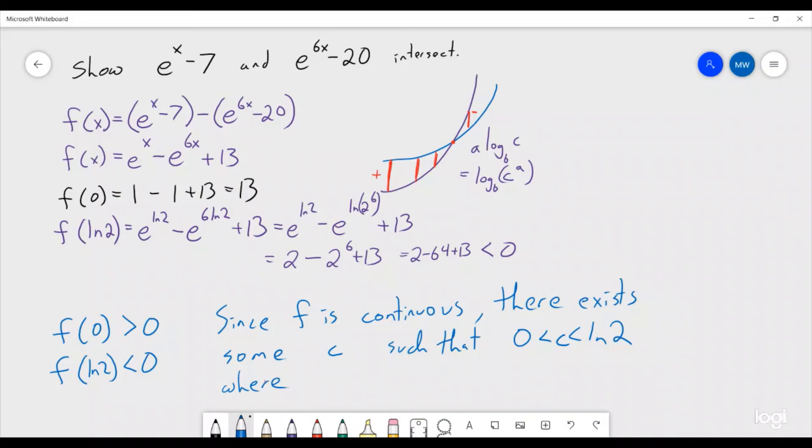Where f(c) equals 0. Now, if f(c) equals 0, that means that e^(c-7) is equal to e^(6c - 20). We don't know what it is, but we have successfully shown that those two curves do intersect because there is a c value right here that's going to show exactly where they intersect.